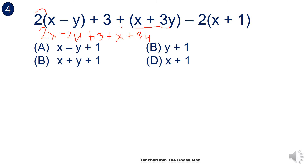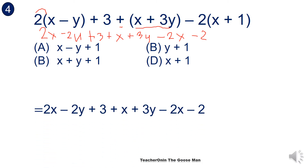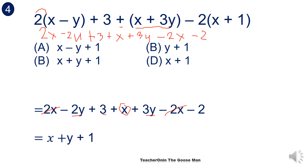Then I'll distribute the negative 2. So negative 2 times x gives negative 2x, and negative 2 times positive 1 gives negative 2. I can remove positive 2x and negative 2x, and combine negative 2y plus positive 3y to get positive y. Then 3 minus 2 gives positive 1, and I have positive x. So I can rearrange this as x plus y plus 1. The correct answer is letter C.